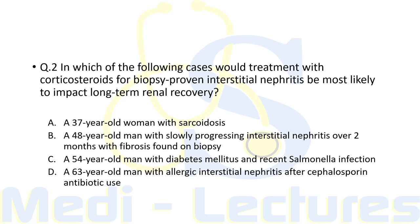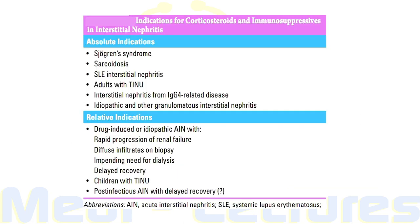MCQ: In which of the following cases would treatment with corticosteroids for biopsy-proven interstitial nephritis most likely impact long-term renal recovery? Options: (A) 37-year-old woman with sarcoidosis; (B) 48-year-old man with slowly progressive interstitial nephritis over two months with fibrosis on biopsy; (C) 54-year-old man with diabetes and recent Salmonella infection; (D) 63-year-old man with allergic interstitial nephritis after cephalosporin use.